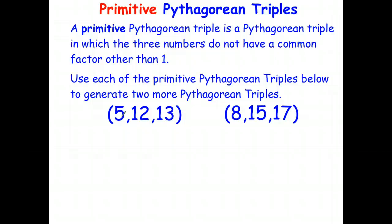So what I'd like you to do is here's a Pythagorean triple: 5, 12, 13. See if you can write down two more Pythagorean triples based on that, and similarly do the same for 8, 15, 17. So stop the video, have a go, and then we'll check the answers shortly.